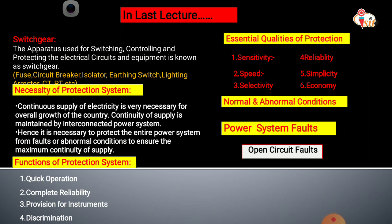Next we discuss the qualities of the protection system. The first quality is sensitivity — the protective system should sense low actuating values and operate on them. The second is speed — the protection system should operate as quickly as possible, in less time. The third is selectivity — the protection system should correctly select the faulty part of the system.